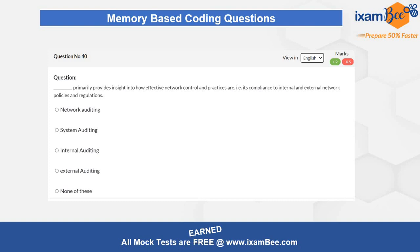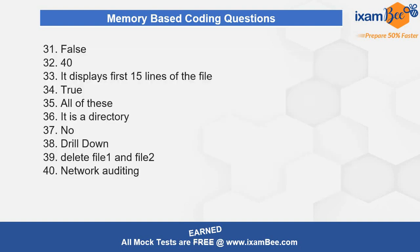Now it is time for the answer reveal. If you haven't attempted all the questions, pause the video, go back to that question, attempt it, and then come back. Once you are done with all the questions, here are the answers for all 10 questions. Give yourself plus 1 for every correct and minus 0.25 for every incorrect attempt. If you are scoring less than 5, it's high time — back up yourselves and start preparing very hard.